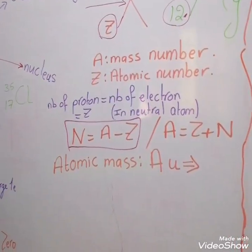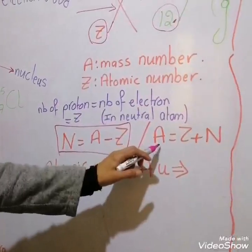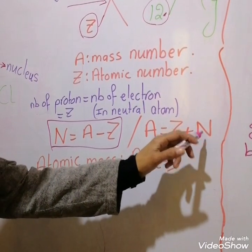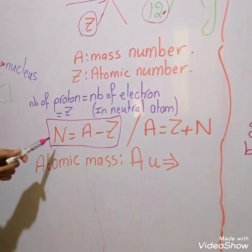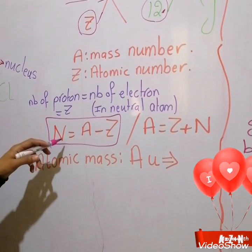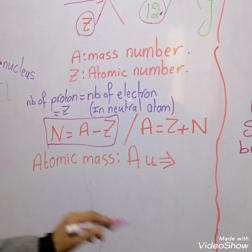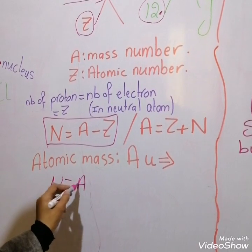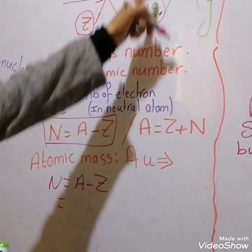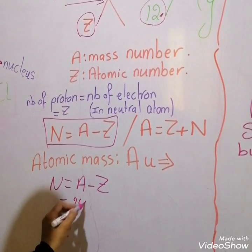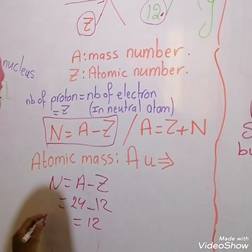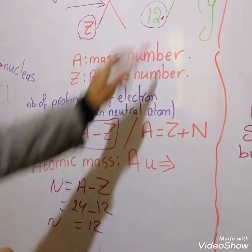If you want to calculate the number of neutrons: mass number A equals Z plus N, where N is the number of neutrons. So N equals A minus Z. For Mg, number of neutron equals A 24 minus Z 12, so N equals 12.